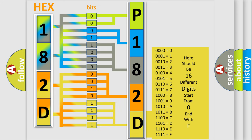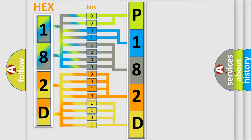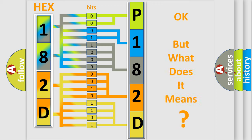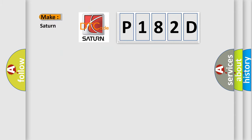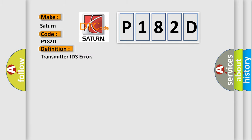We now know in what way the diagnostic tool translates the received information into a more comprehensible format. The number itself does not make sense to us if we cannot assign information about what it actually expresses. So, what does the diagnostic trouble code P182D interpret specifically for Saturn car manufacturers? The basic definition is: Transmitter ID 3 error. And now, here is a short description of this DTC code.